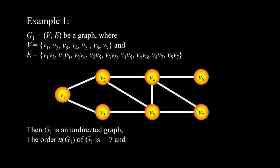The order n(G1) of G1 is 7 — this is the number of vertices. The size m(G1) of G1 is 9 — this is the number of edges of the graph G1.